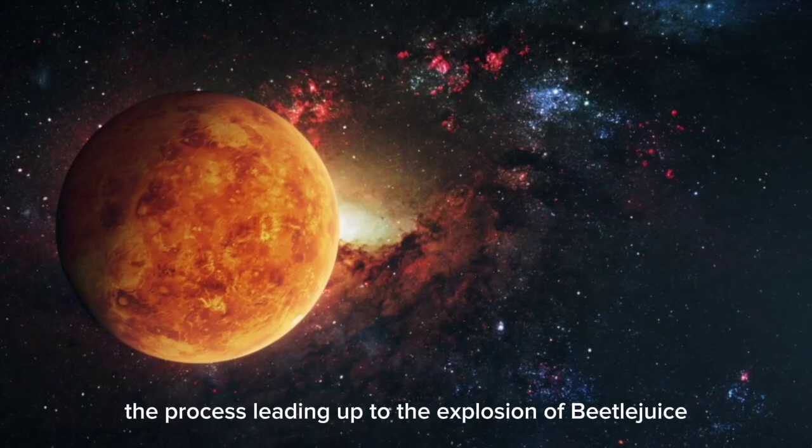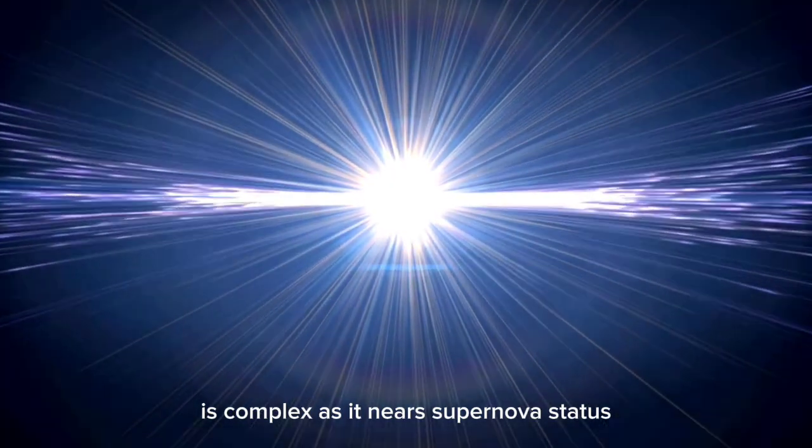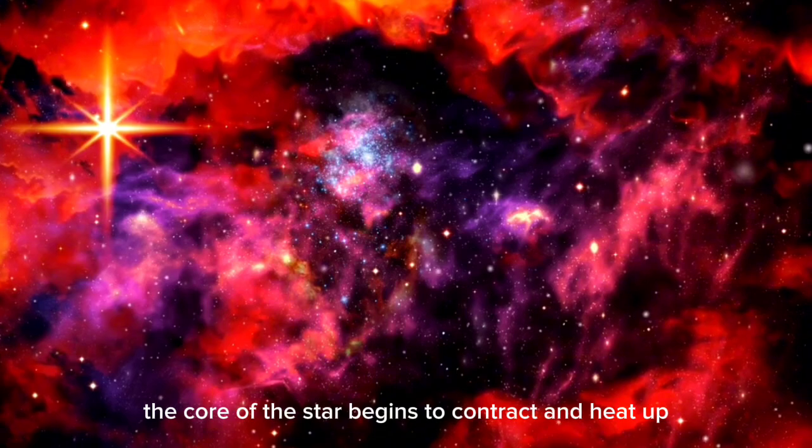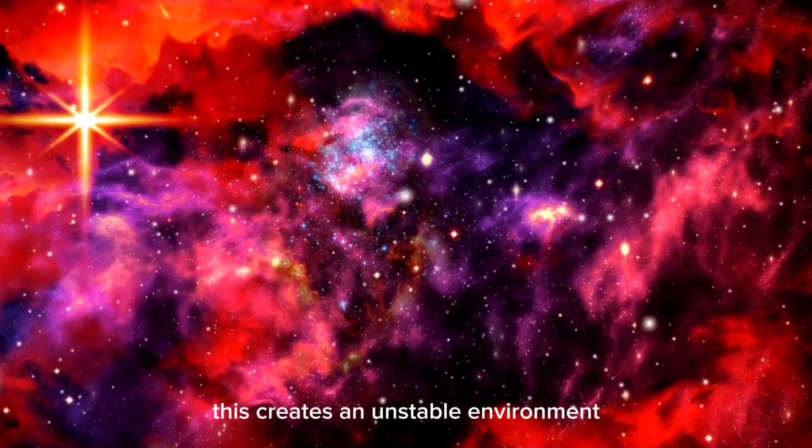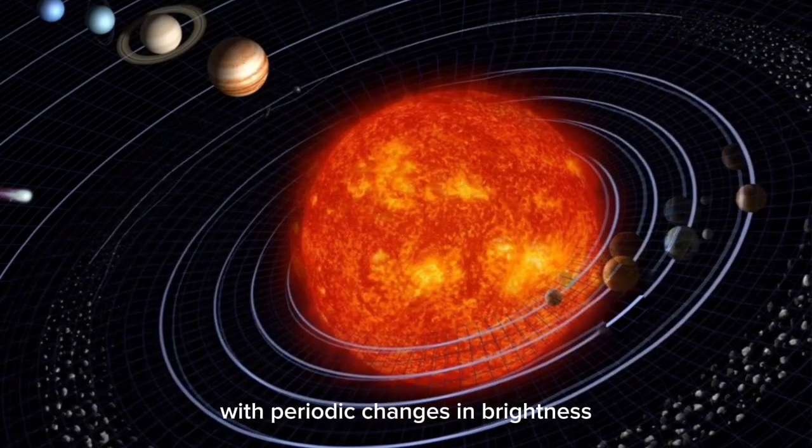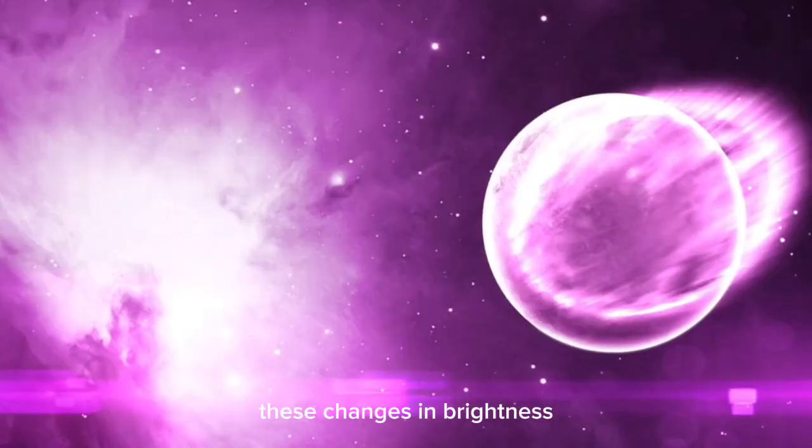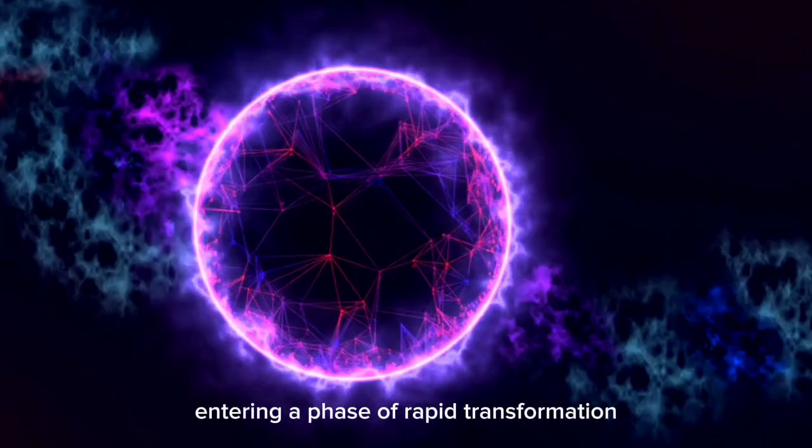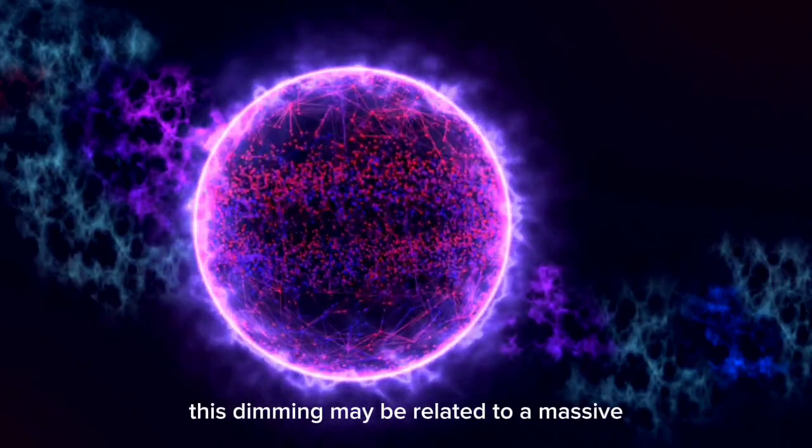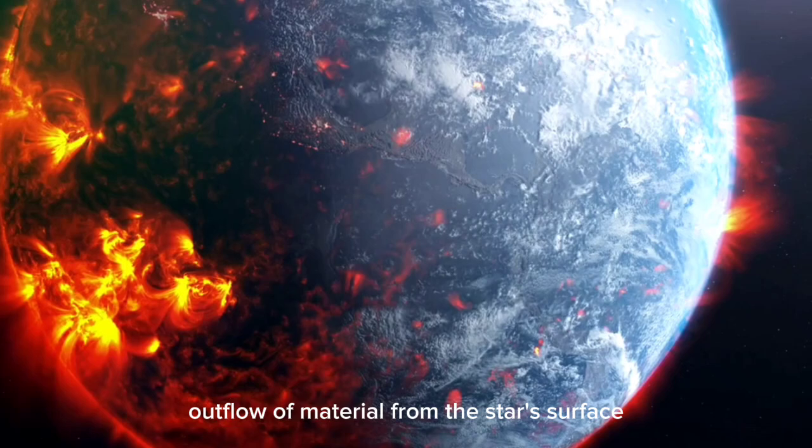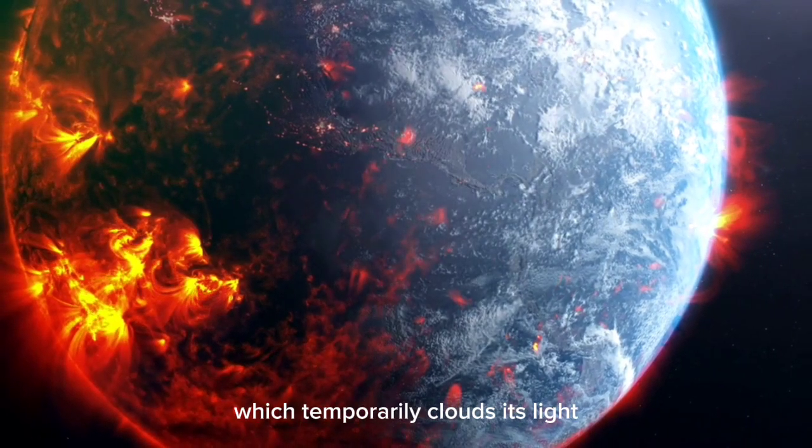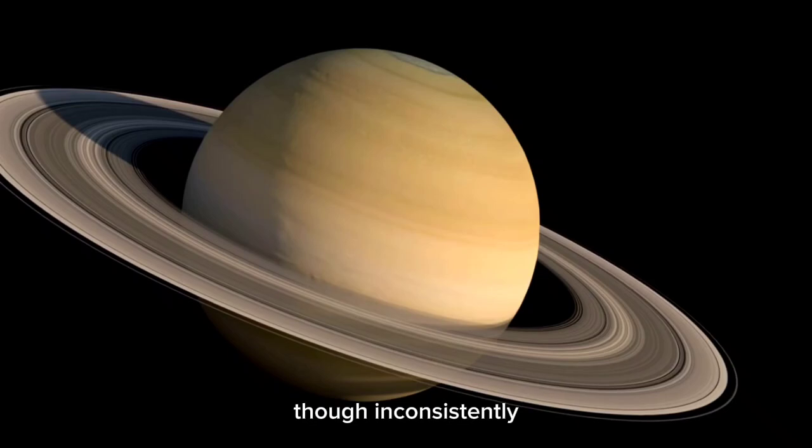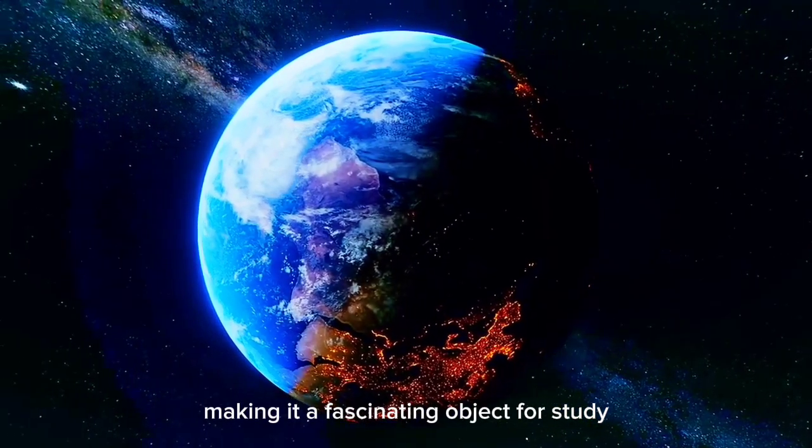The process leading up to the explosion of Betelgeuse is complex. As it nears supernova status, the core of the star begins to contract and heat up while its outer layers expand and cool. This creates an unstable environment with periodic changes in brightness. These changes in brightness, like the darkening event observed in 2019, are signs that the star is entering a phase of rapid transformation. This dimming may be related to a massive outflow of material from the star's surface, which temporarily clouds its light. Despite these variations, Betelgeuse continues to emit light, though inconsistently, making it a fascinating object for study.